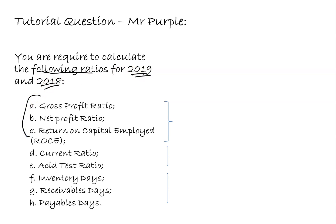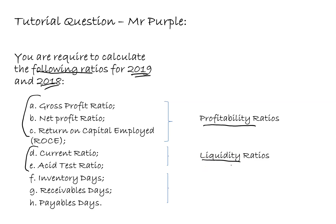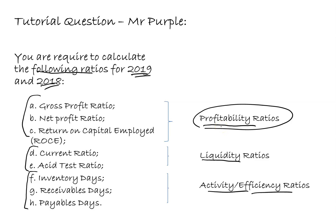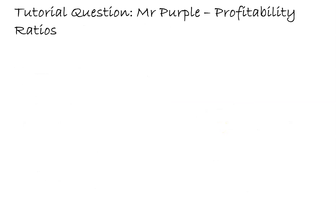The first three ratios are the gross profit ratio, the net profit ratio, and the return on capital employed - these are considered profitability ratios. The next group are the current ratio and the acid test ratio, which are liquidity ratios. Finally, inventory days, receivables days, and payables days are the efficiency ratios. We'll start with the three profitability ratios.